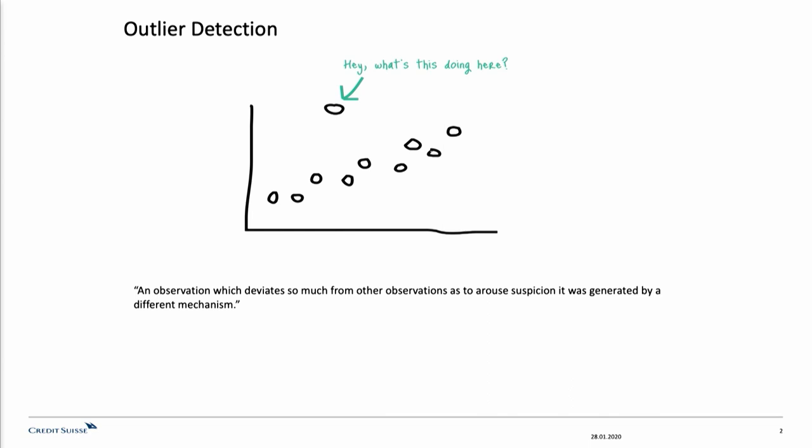Let's start with the general definition of outliers. Outliers are extreme values that deviate from other observations in the data. Even though this definition may vary depending on the data that you're looking at - think about image data, audio data, or tabular data.